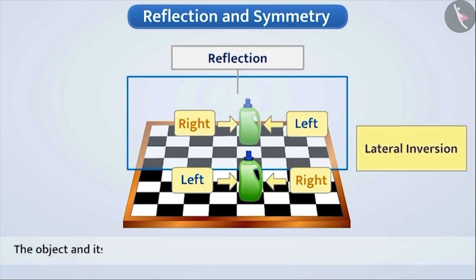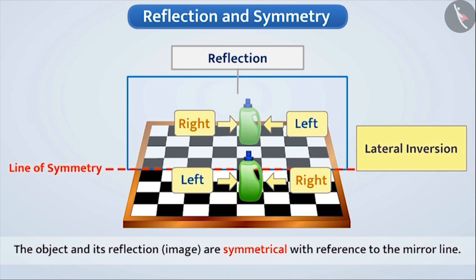In such a situation, we see that the object and its reflection are symmetric with reference to the mirror line. Thus, the mirror line becomes a line of symmetry. Let's understand it more comprehensively.